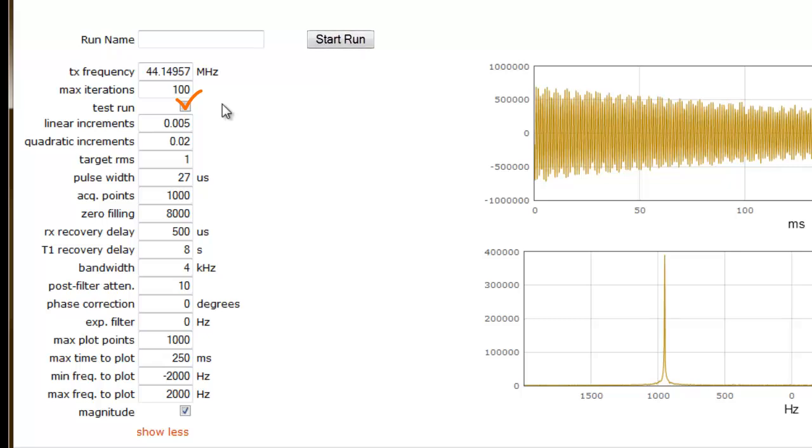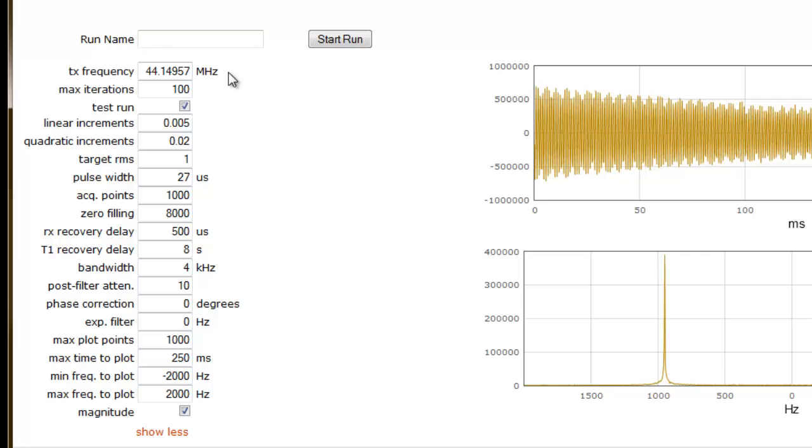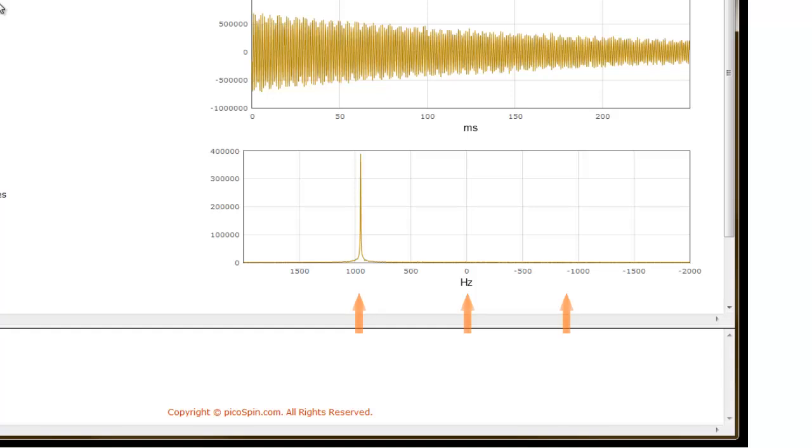Now execute the AutoShim script by clicking on the Start Run button. What this will do is give us an FID and a spectrum plot to look at. Now let's take a look at some of the parameters we'll need to consider for shimming. The transmit frequency is the excitation energy used to excite our nuclei. By adjusting this frequency, we can reposition our signal to the left or right of the center frequency in the spectrum window.